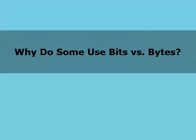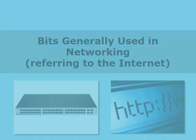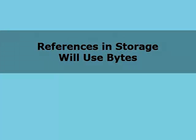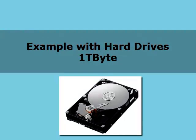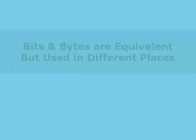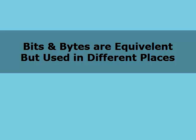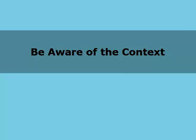Final word: why do some people use bits and some use bytes? Bits are used mostly by networking engineers or people in networks — if you want to talk about the Internet, it's usually measured in bits. If you want to talk about storage, you more often talk about bytes. If you buy a hard drive, it's typically measured in bytes — you have one terabyte; you could say eight terabits, but that would be bizarre. They are equivalent but used in different places. In surveillance, which involves both networking and storage, sometimes people use one and sometimes the other. You just need to be aware and make sure you're agreeing on whether you're talking about bits or bytes.